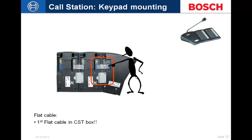An important note: the first keypad ribbon cable comes with the network controller and is a very special cable — it is about a quarter inch longer than the keypad connectors that come with the keypads themselves. If you discard this ribbon connector, you will not be able to plug in your keypads because that extra quarter inch is required. Pay attention when opening your call station — that ribbon cable is located inside that box.